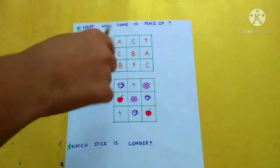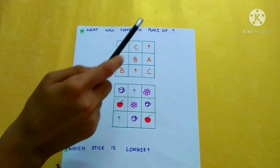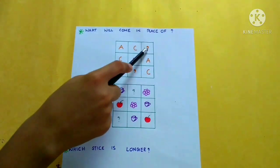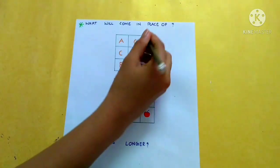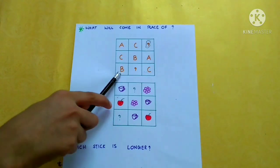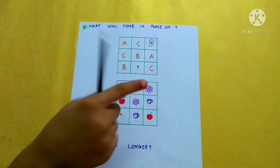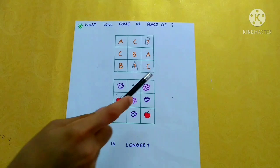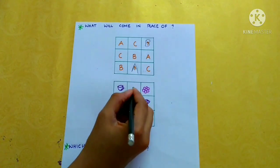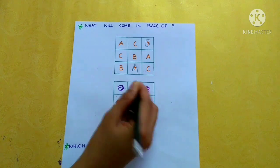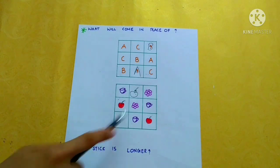This will come in place of the question mark. This is a simple sudoku. Each row and column should have a letter only once. In the first row, A and C are there but there is no B, so in place of the question mark, B will come. In the third row, B and C are there and A is not, so it will be A. There is a cup and flower but no apple, so in place of the question mark it will be apple. In the first column, there is cup and apple but no flower, so flower will come.